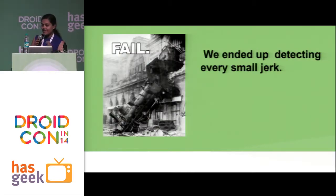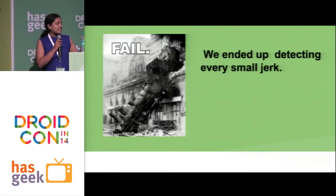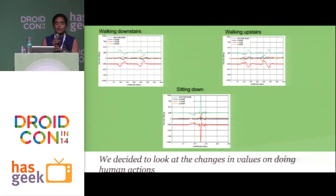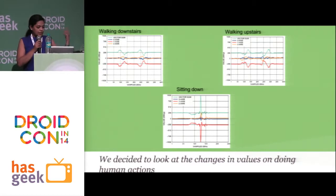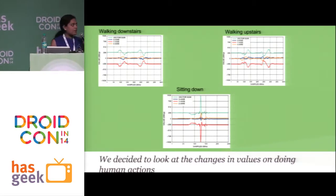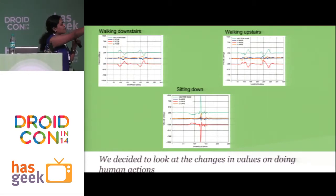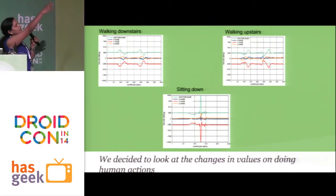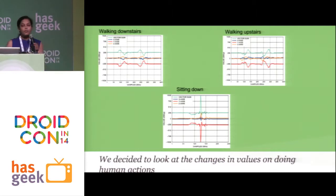Then we saw that, oh god, the phone was detecting every small jerk — every shake — not just falls. We went back and looked at a lot of papers, reading about how accelerometers react to various scenarios, like when people are walking or sitting down or simply tapping the phone. We saw these graphs showing surges in acceleration even during normal activity. And while sitting down, we saw a big surge. We were like, what do we do now?